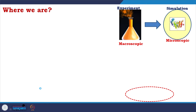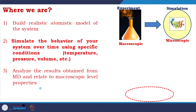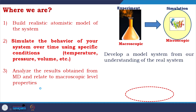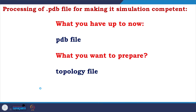We already have built the realistic atomistic model — now we want to simulate the behavior of the system. We have a clean PDB file, but you cannot use the PDB file directly for simulation. What you have is a PDB file; what you want to prepare are topology file and parameter file. We have already started the simulation part, but in this step we will not run simulation first — we will prepare the file properly so that it can go under simulation.